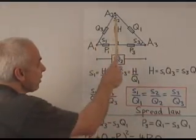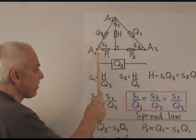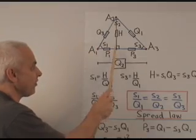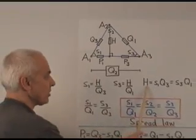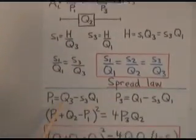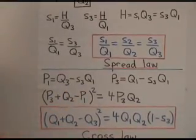In this triangle here, again the right triangle, Pythagoras tells us that p1 is equal to q3 minus h. But since h is equal to s3 q1, we can write p1 equals q3 minus s3 q1.